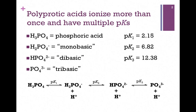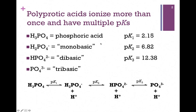One of the most common polyprotic acids in biological systems is phosphoric acid — it is the buffer system used within most cells. We start with the most acidic form, phosphoric acid, H3PO4. As you can see, it's a triprotic acid: it has three protons to donate, and each one has an associated pKa value.